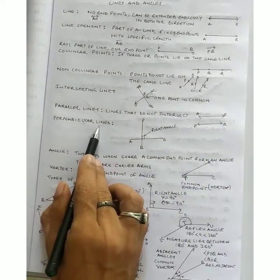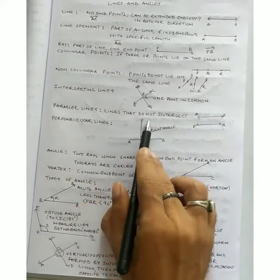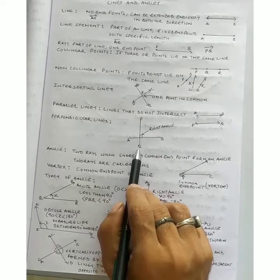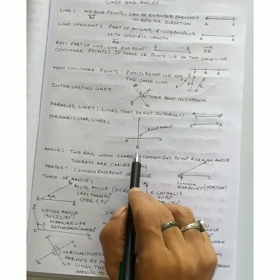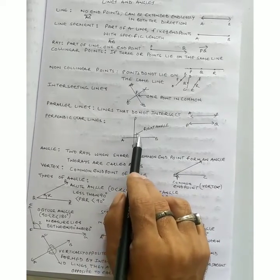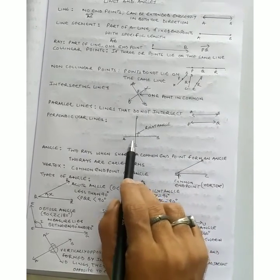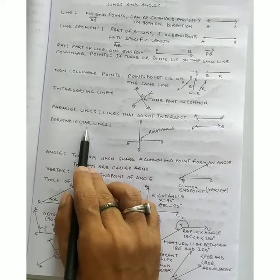We call them perpendicular lines. What are perpendicular lines? Perpendicular lines are those lines which intersect and form a right angle. If two lines are intersected and they form a right angle, then we call them perpendicular lines.